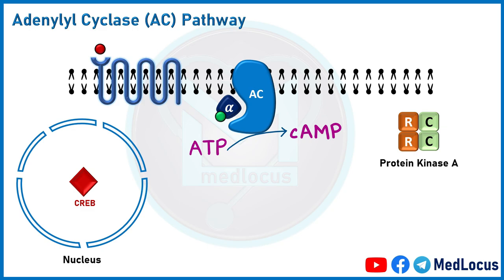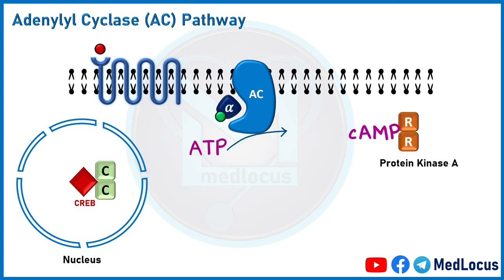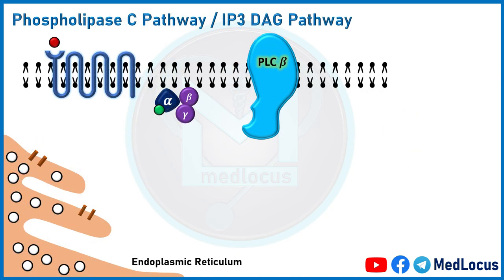PKA, or protein kinase A, in its inactive form has four subunits: two regulatory subunits and two catalytic subunits. cAMP binds to the regulatory subunits and frees the catalytic subunits into the cytosol. The catalytic subunits enter the nucleus and phosphorylate CREB protein, or cAMP response element-binding protein, which is a transcription factor. CREB, after phosphorylation, gets activated and produces a cellular response.